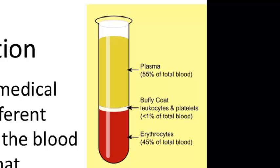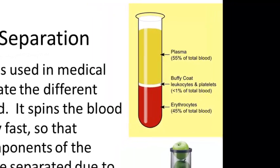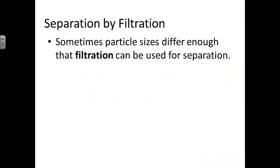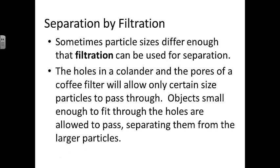You can get blood to separate into these different components just by using a centrifuge. A juicer in your kitchen also works on the same principles. Sometimes particle sizes are different enough that you can use the process of filtration to separate the particles. A colander used in cooking has holes through which some things can pass but not others, and a coffee filter has tiny pores that will only allow certain size particles to pass through.